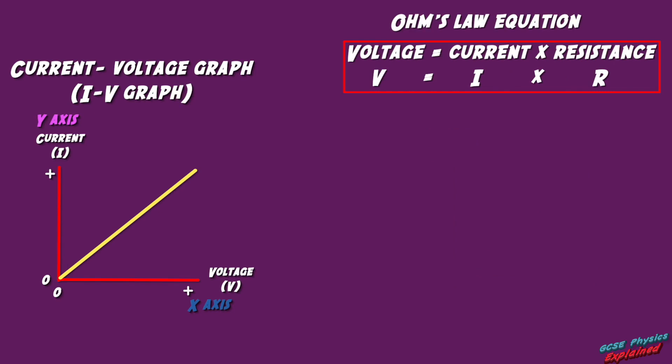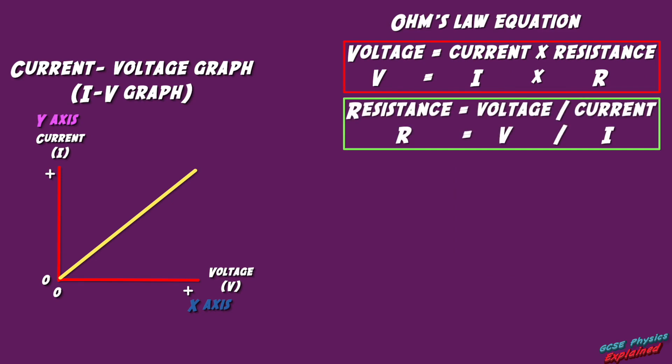I like to rearrange it to find resistance. So resistance R equals voltage V divided by current I. Remember that because I'll come back to it in a minute. To work out the gradient of any graph, you always do the y-axis divided by the x-axis.